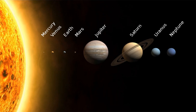Earth, one astronomical unit from the Sun, is the largest and densest of the inner planets, the only one known to have current geological activity and the only place where life is known to exist. Its liquid hydrosphere is unique among the terrestrial planets and it is the only planet where plate tectonics has been observed. Earth's atmosphere is radically different from those of the other planets, having been altered by the presence of life to contain 21% free oxygen. It has one large satellite, the Moon, the only large satellite of a terrestrial planet in the solar system.